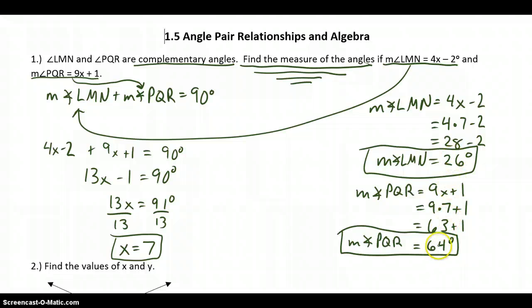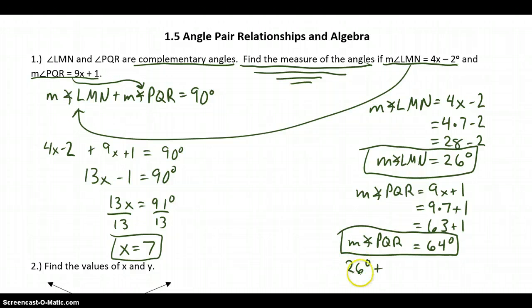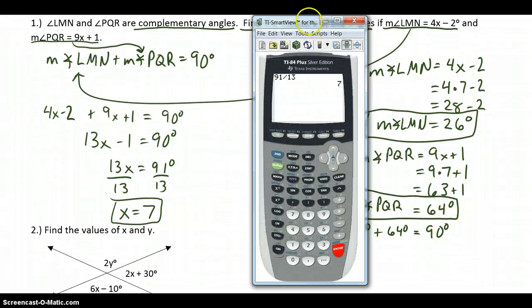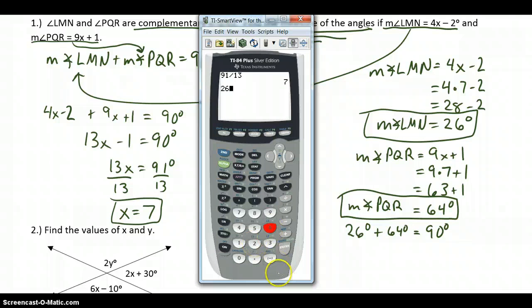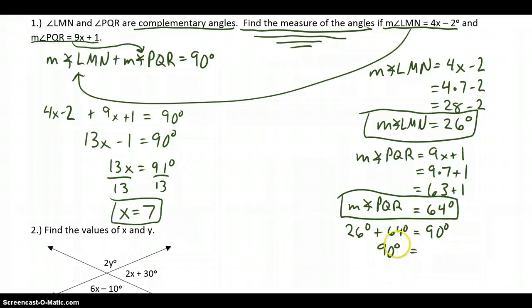Now I can check this answer. Originally I started with the statement that the two angles sum to 90 degrees. I can plug in these answers to double check. The measure of angle LMN is 26 degrees, plus the measure of angle PQR, 64 degrees, should equal 90 degrees. Taking 26 plus 64, I get 90. So 90 equals 90 — that checks out.